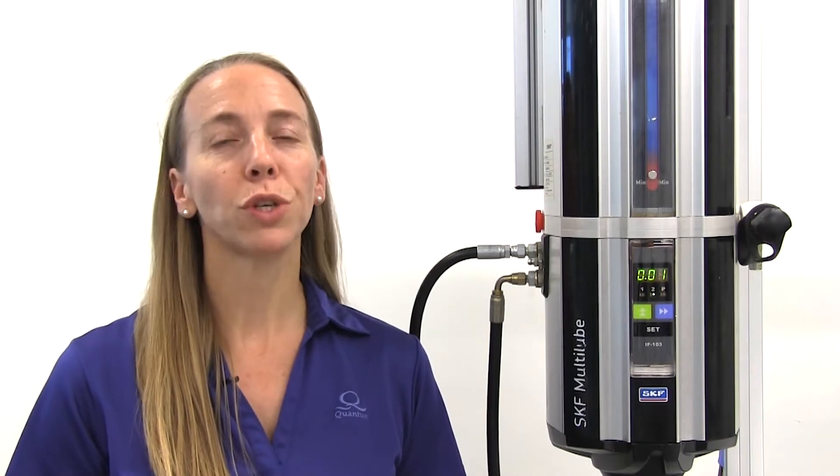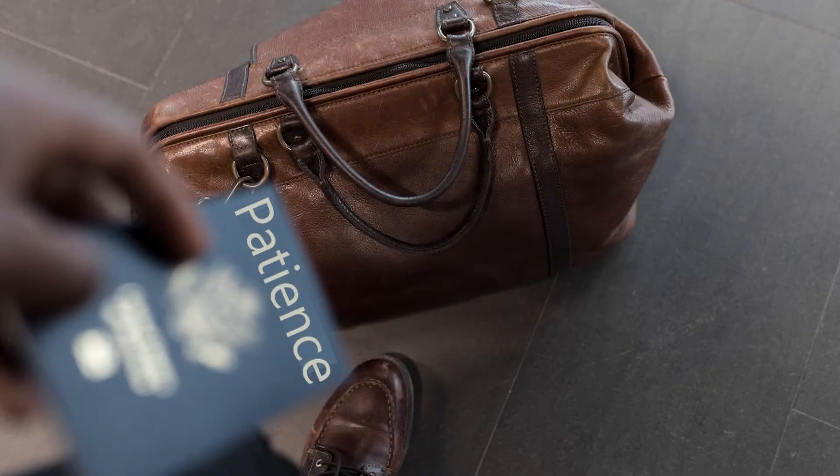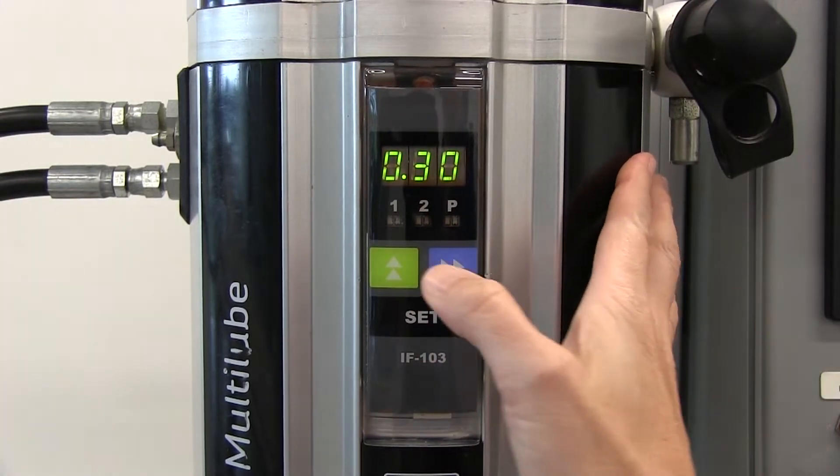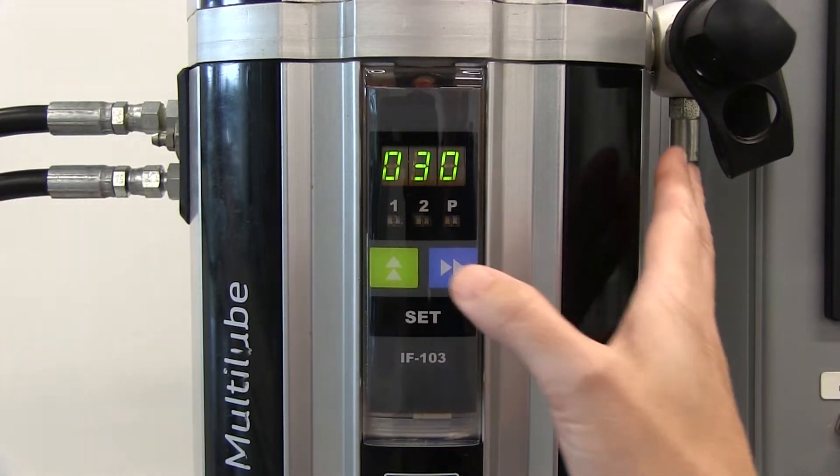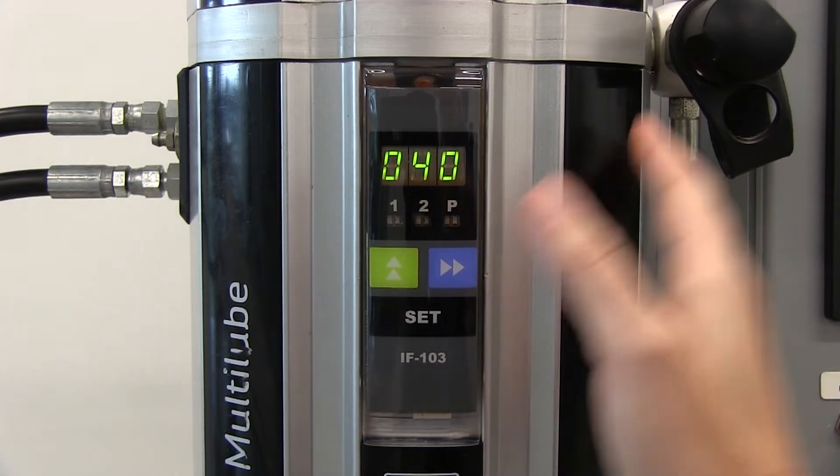Just as a warning, to adjust the control unit parameters, we will be using the display on the front of the control unit. Please pack your patience. Be prepared to press the buttons firmly and slowly to complete this process in a time-efficient manner and to avoid losing your sanity.